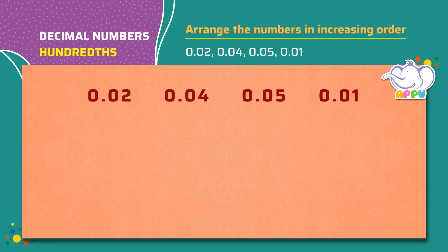We compare the hundredths place. We have 2, 4, 5 and 1. We arrange these in increasing order.